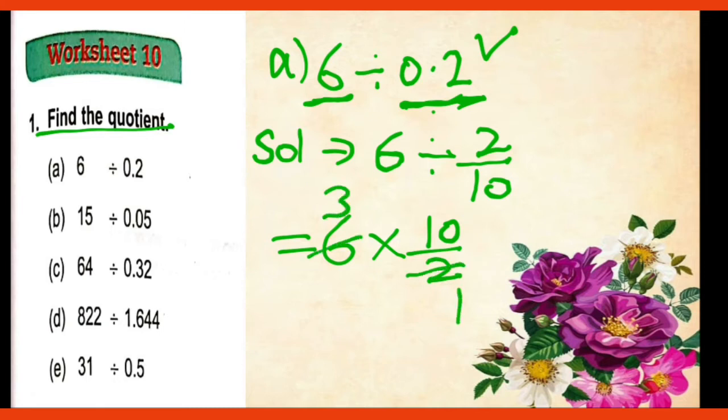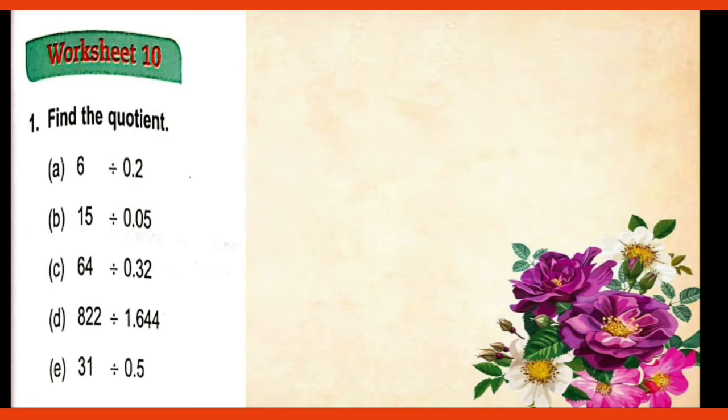And now we will cut it like this. 2 1s are 2 and 2 3s are 6. So 3 multiplied by 10 upon 1. This is the fraction. So 3 times are 30. 30 upon 1 means 30. So 30 is your answer.